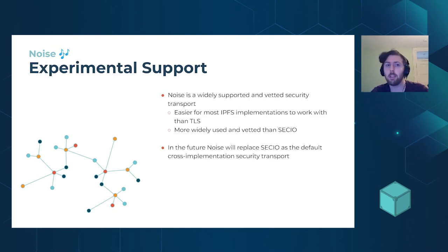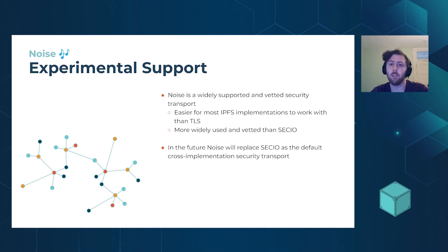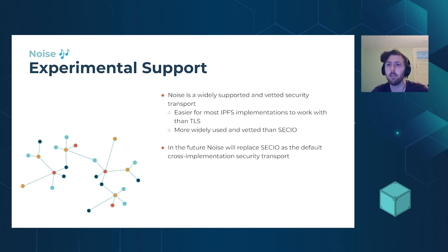Next up is noise: we have experimental support for the noise security transport. Noise is going to be easier for most IPFS implementations to work with than TLS, which is why other libp2p implementations have adopted it. Noise is more widely used and vetted than secio, which is the current IPFS default, and we're planning to use noise to replace secio as the default cross-implementation security transport.